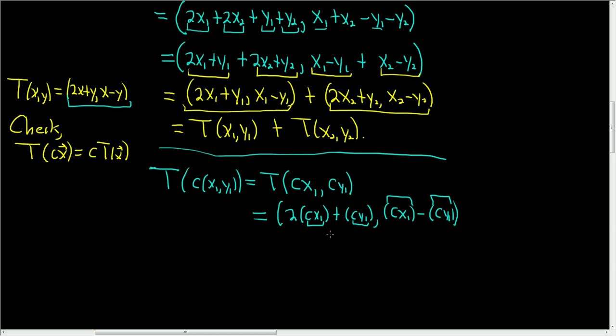Well, these are all numbers, so we can actually factor out the c. This is equal to parentheses c. And then here we have 2x1 plus y1, comma, and then factor out the c here. This is cx1 minus y1.